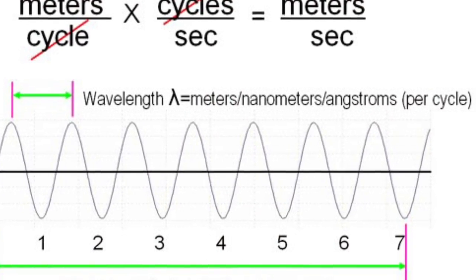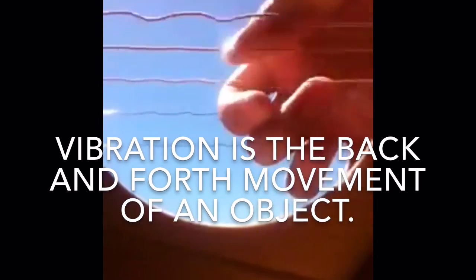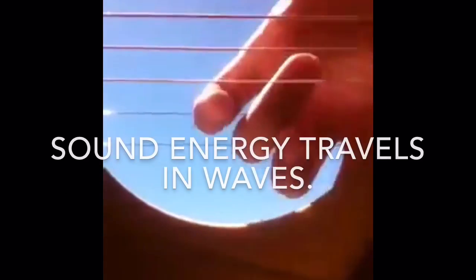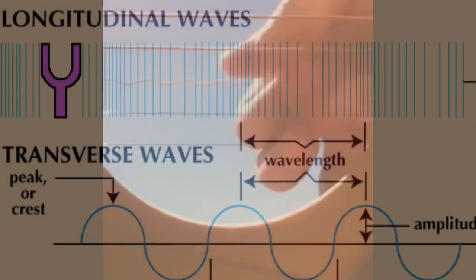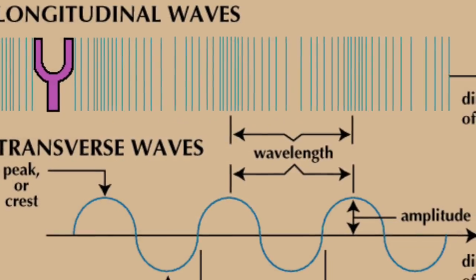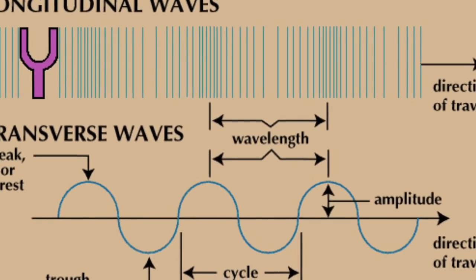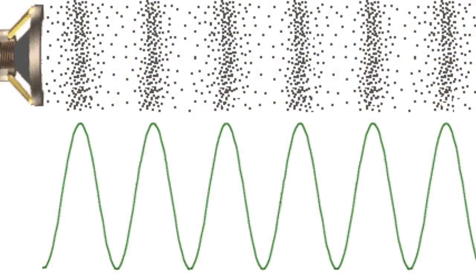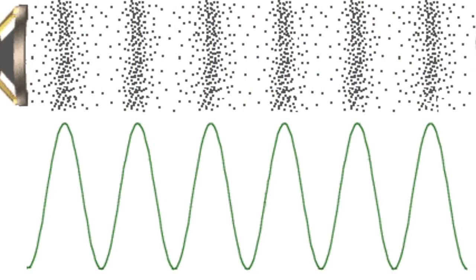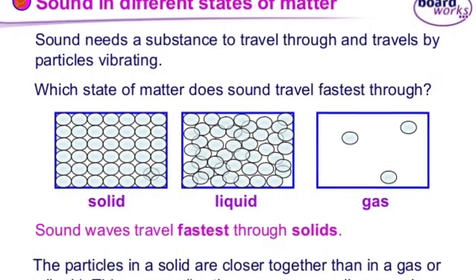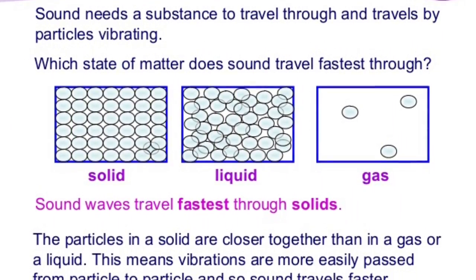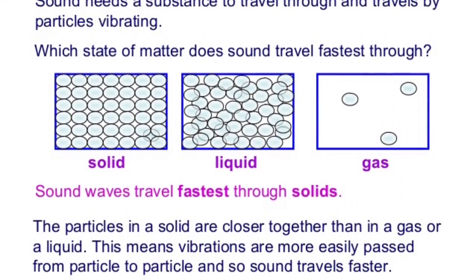Every sound is produced by vibration. Vibration is the back and forth movement of an object. Sound energy travels in waves. Sound waves are longitudinal waves. In longitudinal waves, the vibrations are parallel to the direction of the wave. Sound waves can travel through solids, liquids, or gases, but it travels differently through each one.